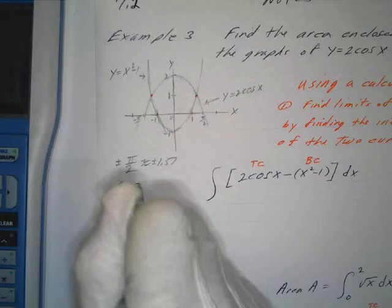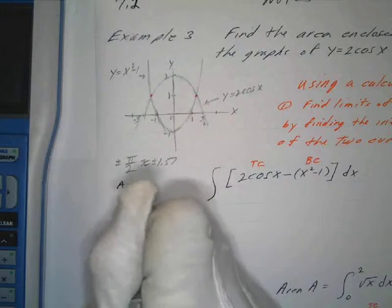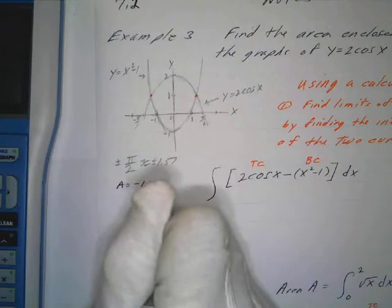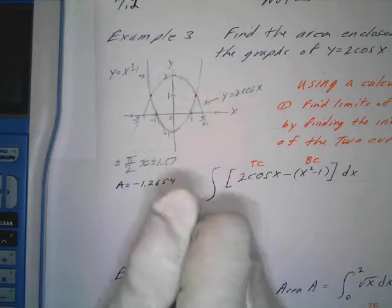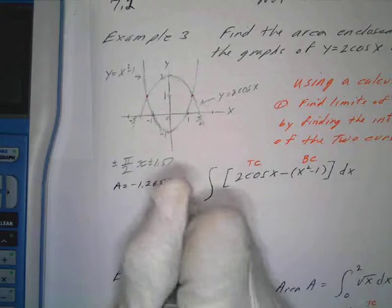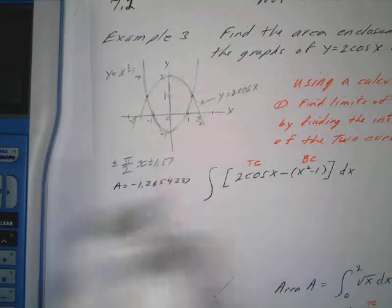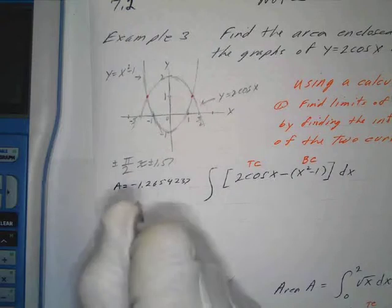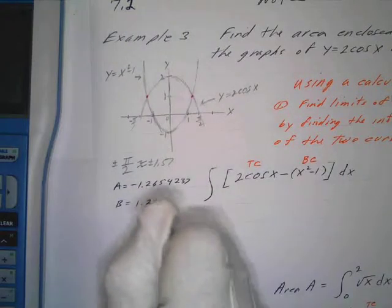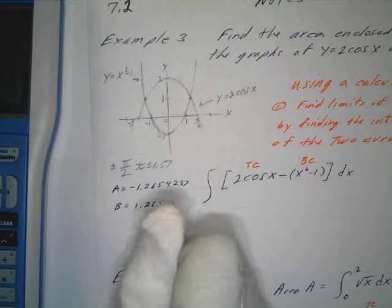Now, what you do on the AP exam is you can write the alpha a and the alpha b down, so you can say let a equal, and that would be negative one point two six five four two three seven. And b - and I think you only have to carry out two places, but the same thing - one point two six five four two three seven.